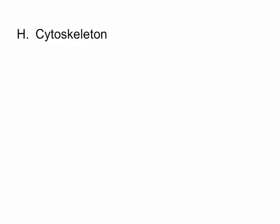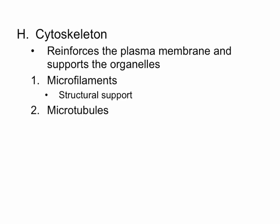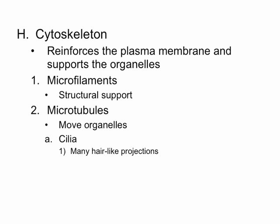Your cell also has a skeleton called the cytoskeleton, so it's not just a blob floating around — there are structural elements inside the cell. They reinforce the plasma membrane and support or move the organelles. One type of cytoskeletal element is called a microfilament, used for structural support. The other type is a microtubule, responsible for moving organelles. Cilia are formed from microtubules — many finger-like or hair-like projections sticking up off the top of a cell, functioning to move materials past a cell.